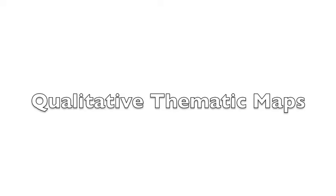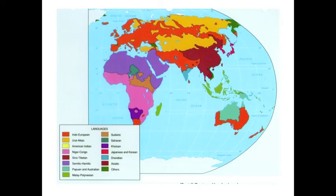There are two types of thematic maps: qualitative thematic maps and quantitative thematic maps. Qualitative thematic maps show the where — like this map here of the global distribution of language families. It's not showing us what percentage of the world's people speak an Indo-European or Sino-Tibetan language; it's just showing us where these speakers are.